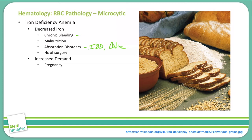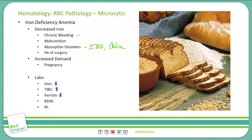So let's look at what labs will show in iron deficiency anemia. The total body iron stores will obviously be down. The total iron binding capacity of the blood, or TIBC, is going to be increased — you have less transferrin that is bound to iron, therefore there are more binding sites for iron, increasing the TIBC. Ferritin is decreased. Your red cell distribution width will be increased because the body is producing more red blood cells at a faster rate and they are not maturing. And your reticulocyte index will be decreased.